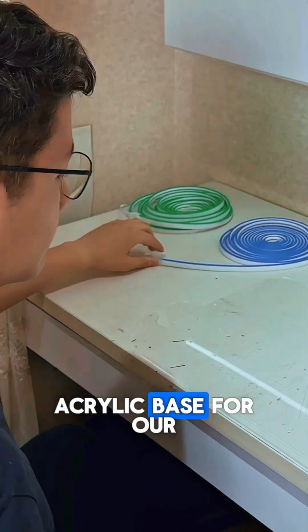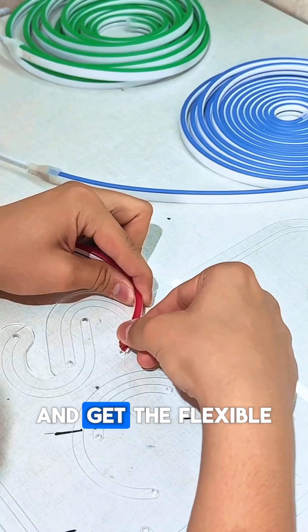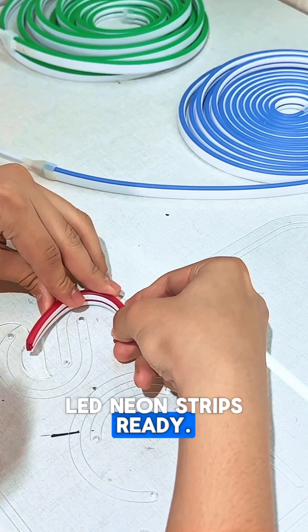First, we prepare the acrylic base for our neon sign and get the flexible LED neon strips ready.